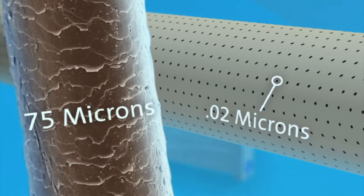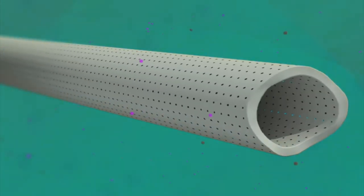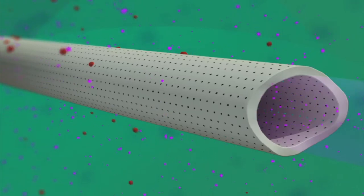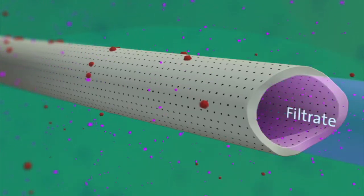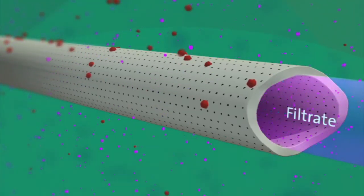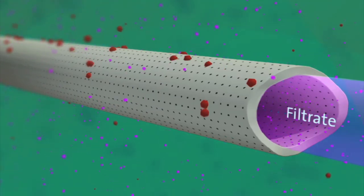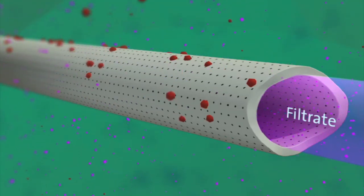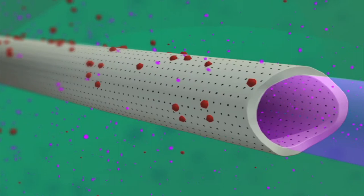A human hair is about 75 microns in diameter. These membrane fibers sit in cells filled with tertiary treated wastewater, also called feed water. Pumps draw the filtered water or filtrate through the microscopic pores into the fibers themselves. The pores act as a physical barrier. Only filtrate can pass through the pores.